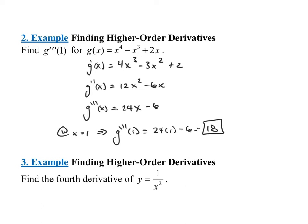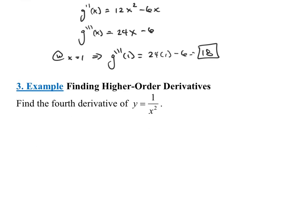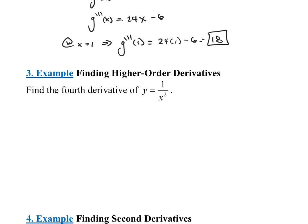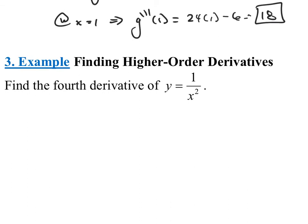Let's look at the next one. It says find the fourth derivative of y equals 1 over x squared. The way I really want to look at it — instead of 1 over x squared, if you remember we want to use the power rule — isn't this the exact same thing as x to the negative 2?